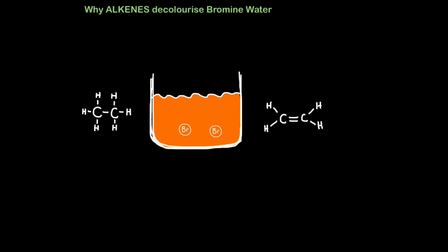Now let's look at why alkenes decolorize bromine water. Here's my orangey-browny bromine water. I've only drawn two atoms in here to make it simple. Here's an alkane, here's an alkene because of its double bond. If I put the alkane in here first, nothing happens. The color stays the same because alkanes are saturated. They cannot bond with the bromine. You can be tested on this.